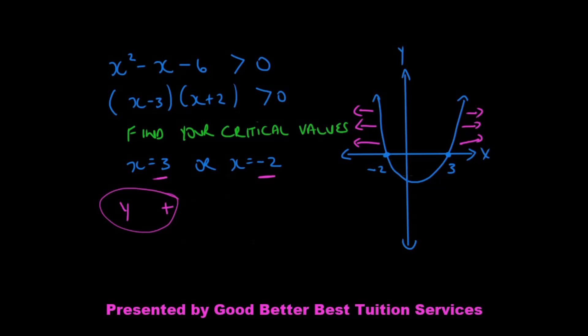It will be less than 0 between negative 2 and 3. So how do we answer our question? We say that x is less than negative 2 or x is greater than 3. Thank you so much for joining us. Please don't forget to subscribe to our channel and share this video with your friends. We hope to see you again soon.